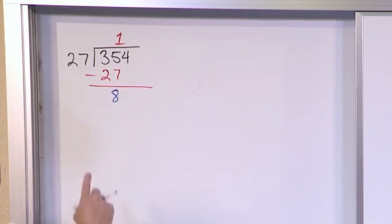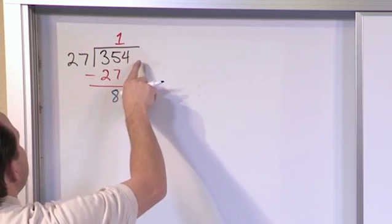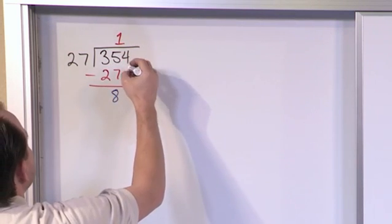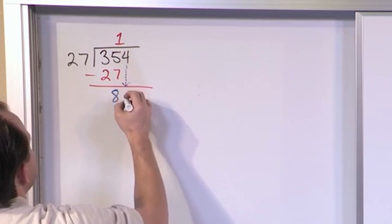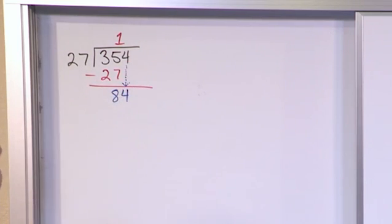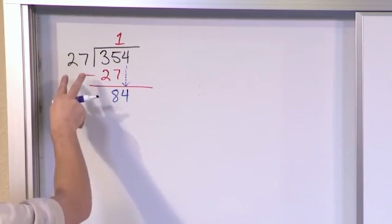Now after I do the subtraction, I look up in my original problem and I see if I have any more digits. And I do have a 4 that was unused so I'm going to draw a dotted line with a little arrow. This 4 gets dropped down. Then I repeat the process. So it's kind of like an over and over again thing.